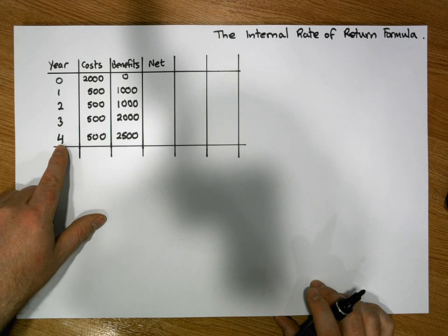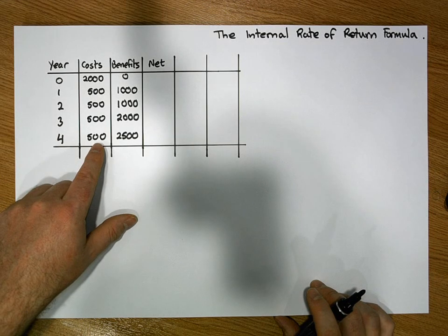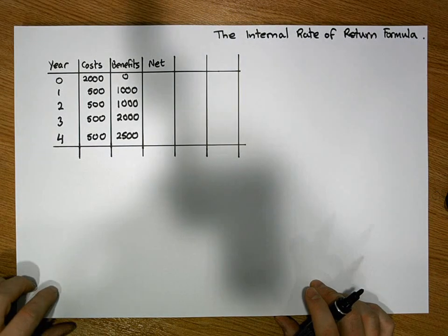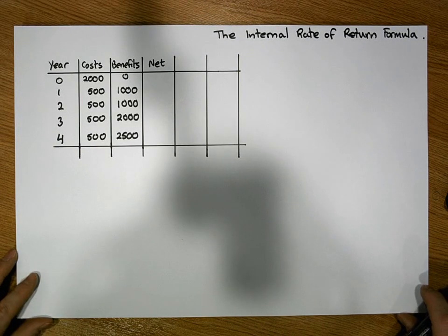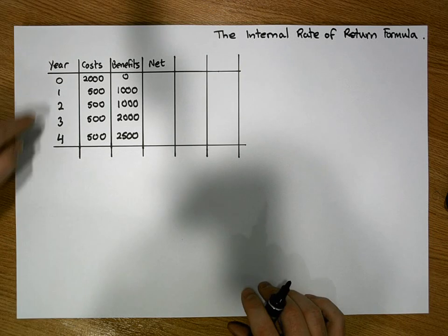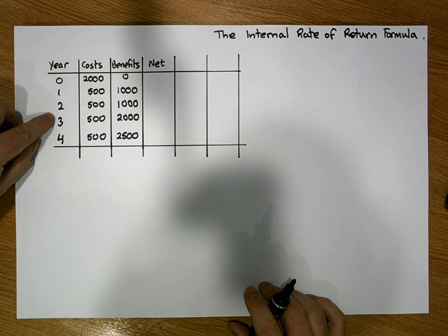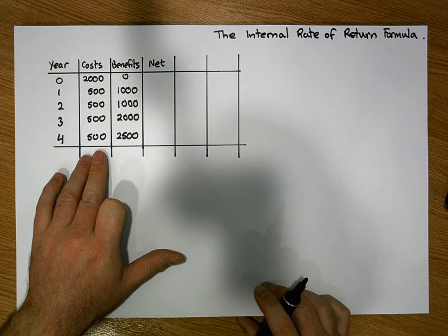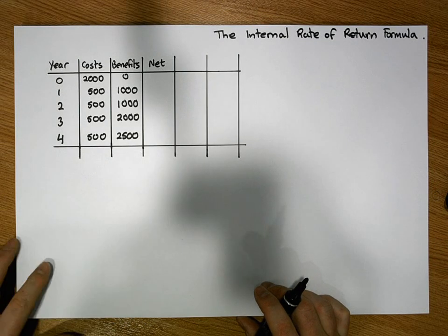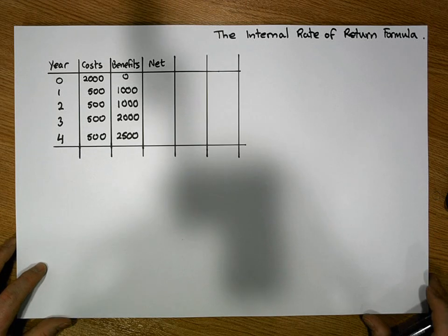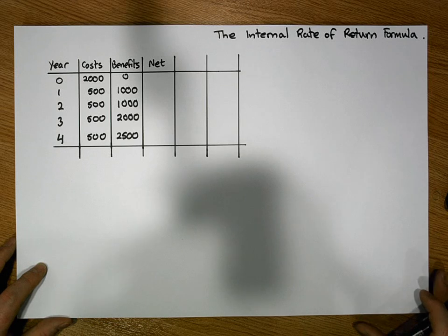After three years have elapsed, costs will be €500 and benefits €2,000. After four years, costs will be €500 and benefits will be €2,500. From a naive perspective, we could ask ourselves whether over this one, two, three, four year period, with this schedule of costs and benefits, whether the project is expected to break even. This is our first attempt at figuring out what is known as the internal rate of return.